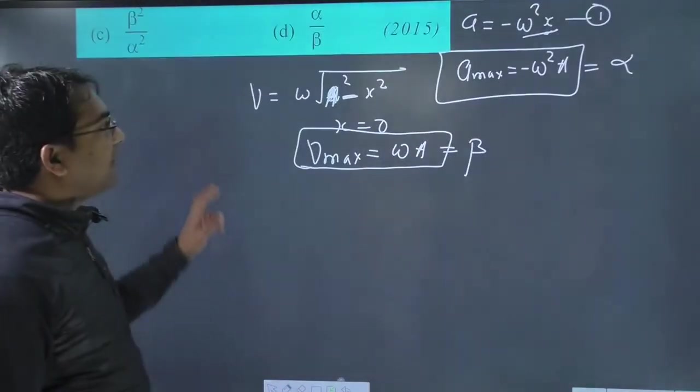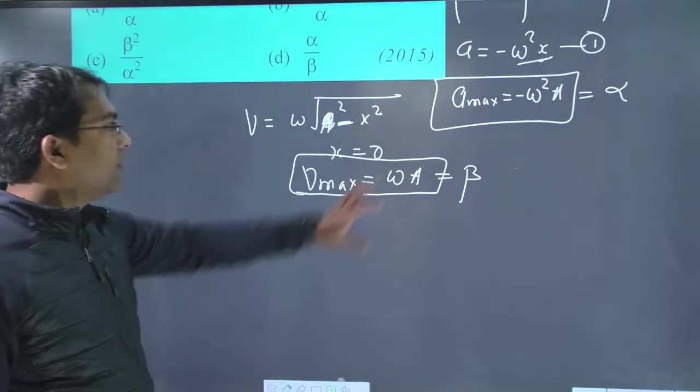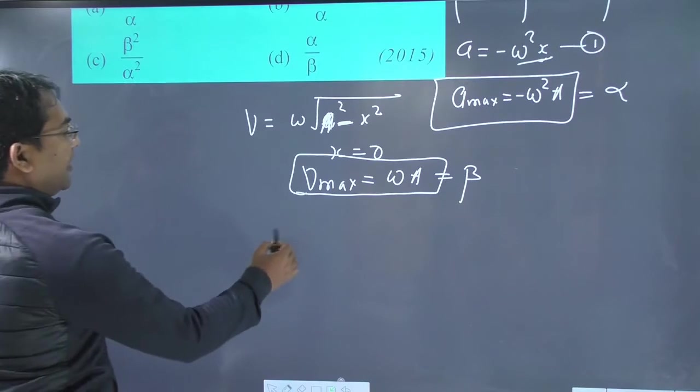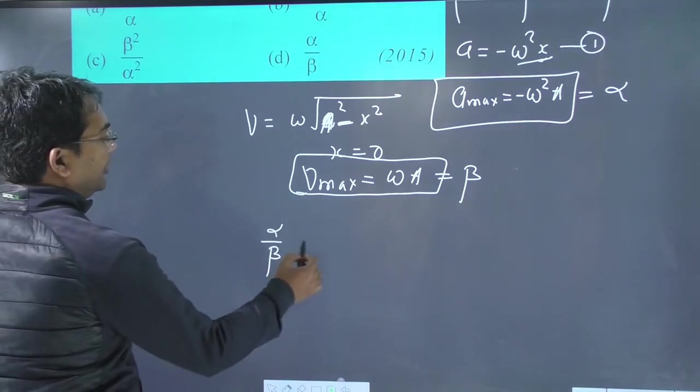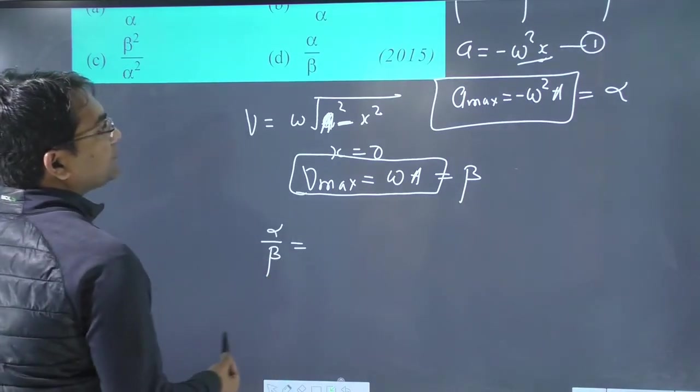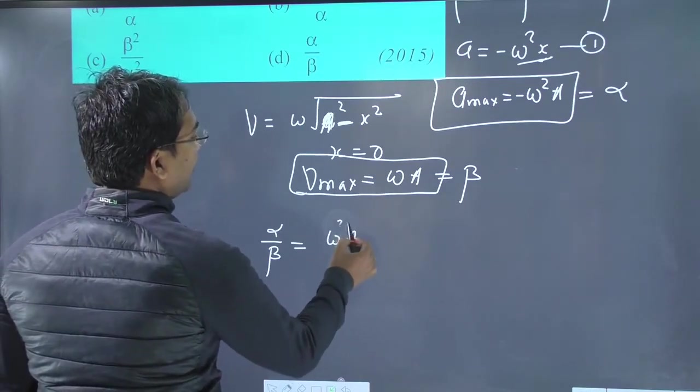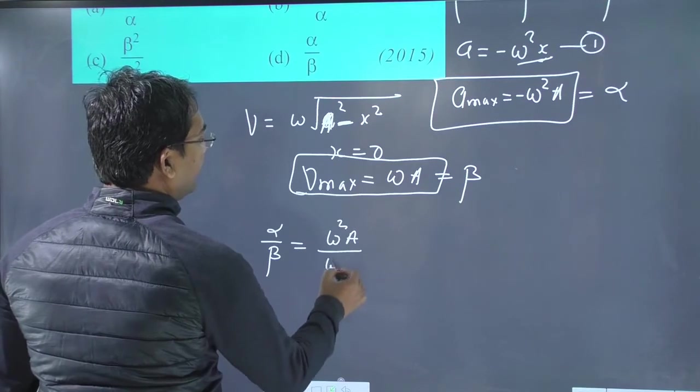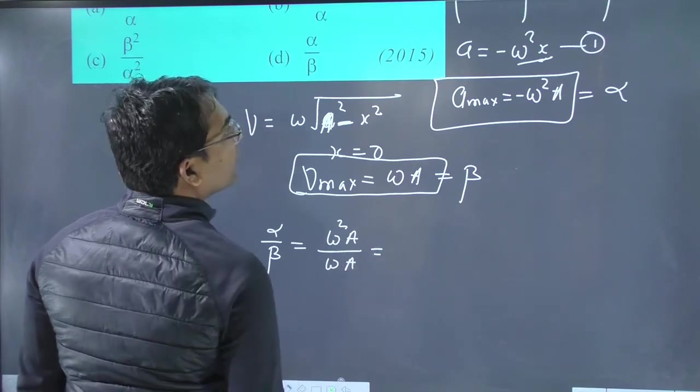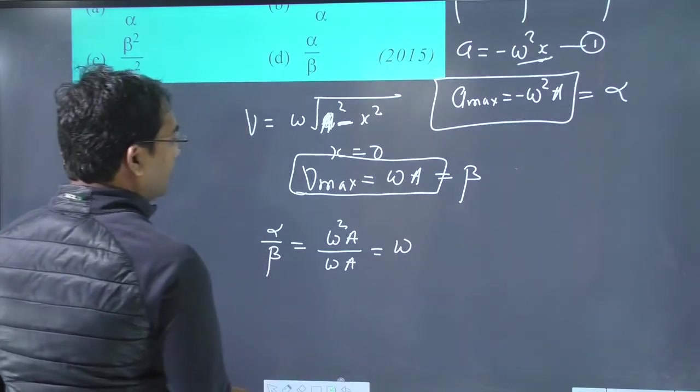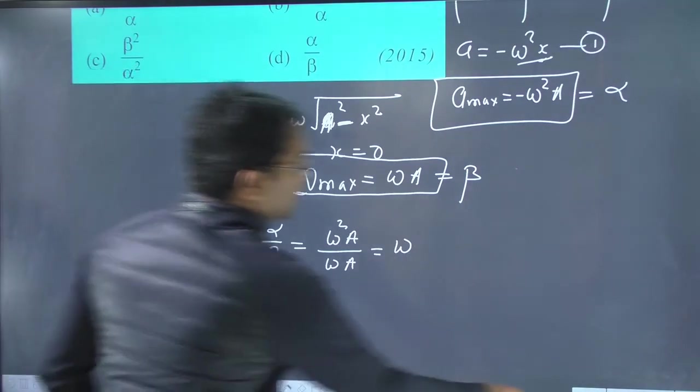Maximum divide kar diya jaye. Negative sign ko ignore kar do. Is mein se is ko divide kar do ge. To alpha by beta. Negative sign ko maine ignore kar diya. Aur omega a, omega square a upon omega. Ek bara aur aap ke liye likh deta hoon. To yeh aa jaye ga omega.